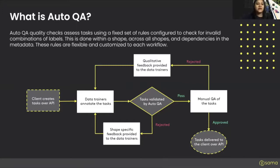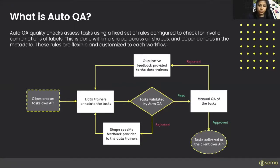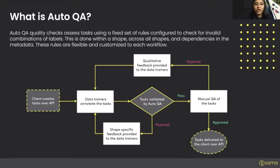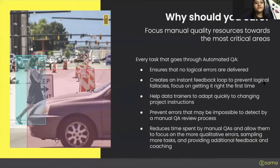So how does AutoQA change the typical quality workflow? You as a client are still creating tasks over API; data trainers annotate tasks as they pick them up. The change happens before the task is submitted or passed to manual QA — AutoQA kicks in and validates the task against the configured rules. It prevents submission when errors are found, and the data trainer receives shape-specific feedback to improve the task. They keep trying to submit until they get it right. Once the task is finally submittable, it passes to manual QA, which checks against the quality rubric — but some checks have already been taken care of.